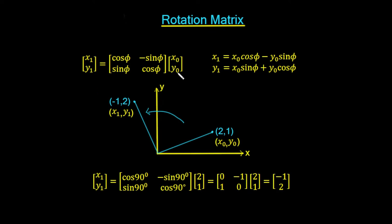This is the matrix here. What it does is it takes a point x0,y0 and multiplies it via this matrix to get another point x1,y1. We've got our y and x-axis, with a point x0,y0 which is (2,1), and we want to rotate this point anticlockwise by 90 degrees. The length here is exactly the same as the length here, so in effect it's rotating it round in a circle.